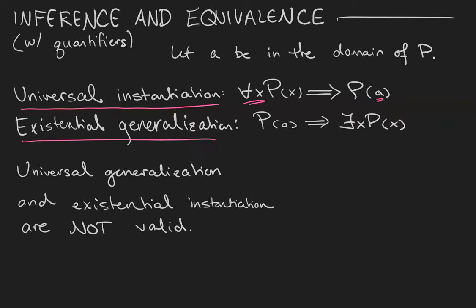Existential generalization says that if we know that a predicate is true for a particular object in its domain, then that means it's true for some object in its domain.